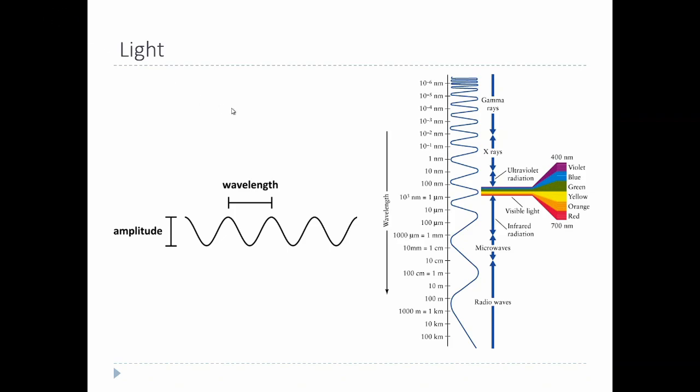Light is the sensory stimulus that the eye and the visual system is used to detect. You might know from physics that light is just a traveling electromagnetic wave, and like any wave, it travels at different frequencies.